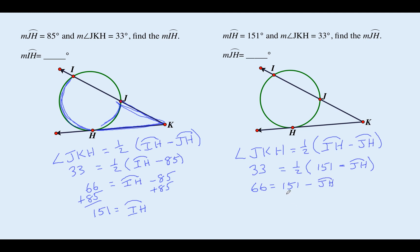Now here's where it gets a little tricky. We're going to subtract 151 from both sides. That makes this negative 85 equals negative JH. We're going to divide both sides by negative one. Cancel out the negative. So that means arc JH is 85 degrees. It's a little tricky there. Do a couple problems, you'll get it.